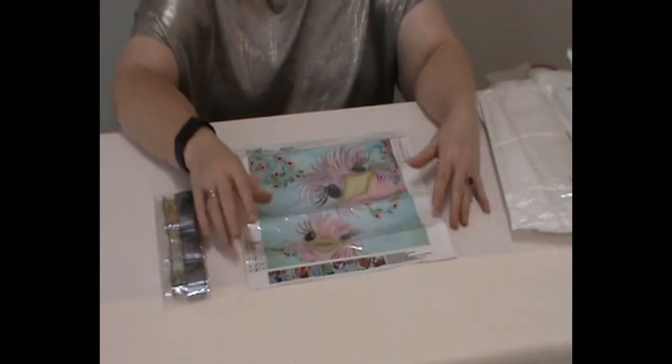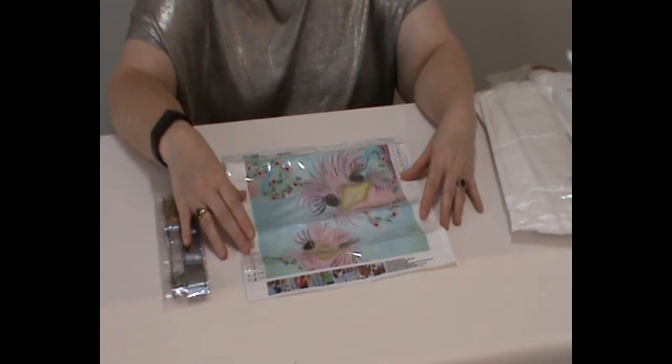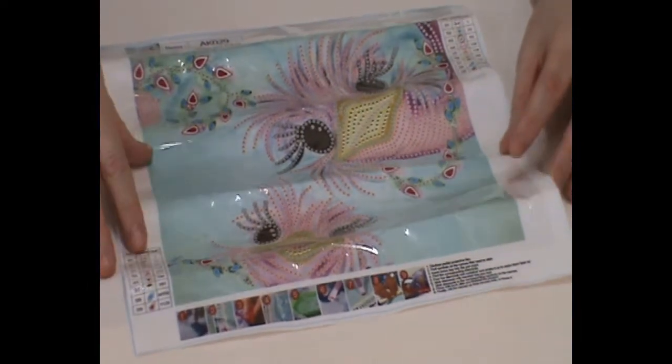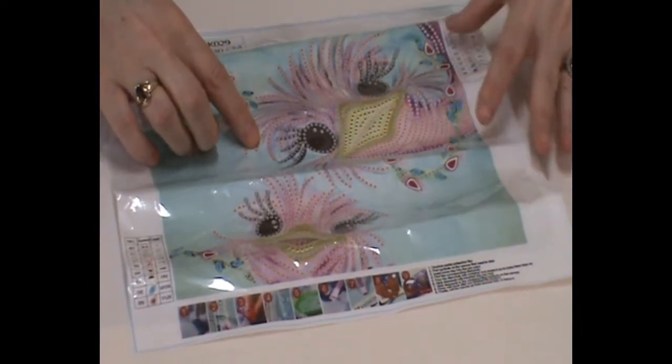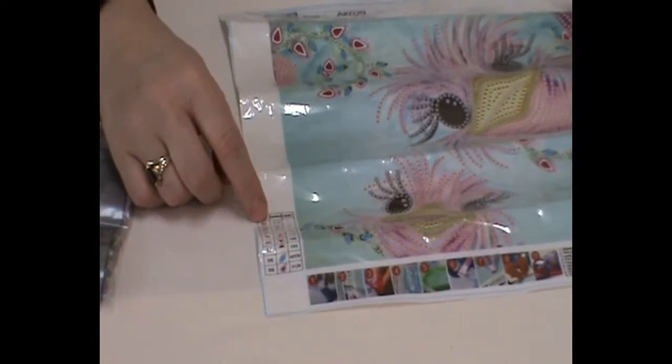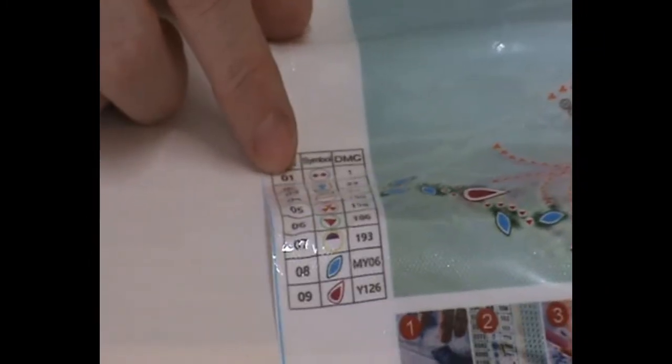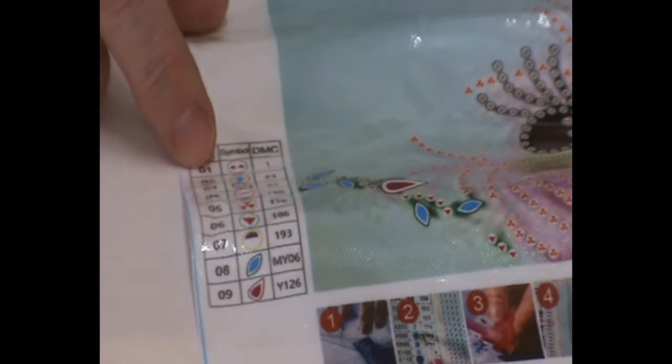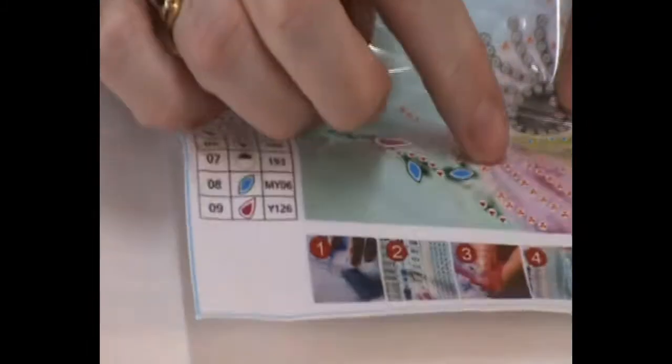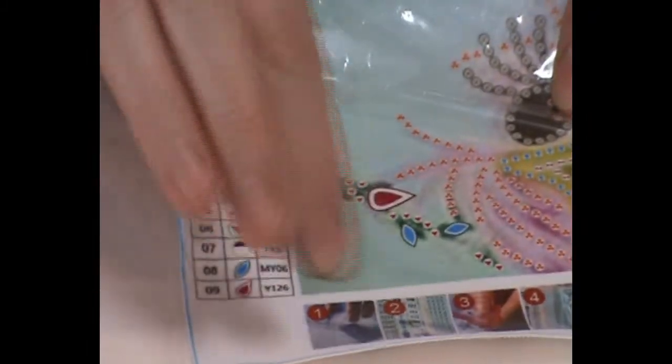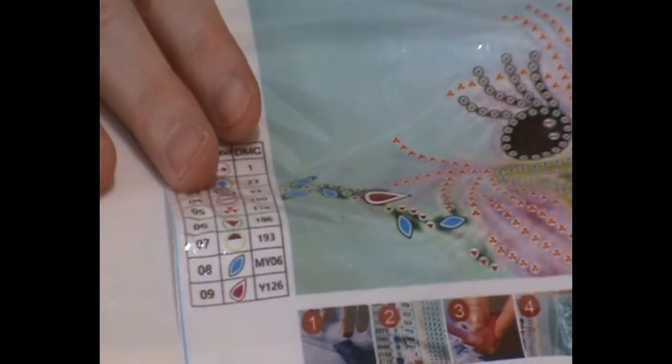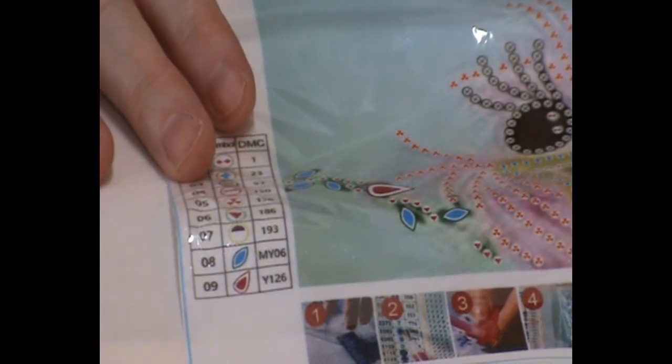So we have two cute little ostriches here. And I think they're females because of the eyelashes in here. But yes, you have only nine different drill types here and you've got two keys either side. The drill field is very clear and once again, it's a partial special where it's only sticky where you need to put the drills, everywhere else there's no glue on it. It's very, very pretty, very cute. It's a happy painting.